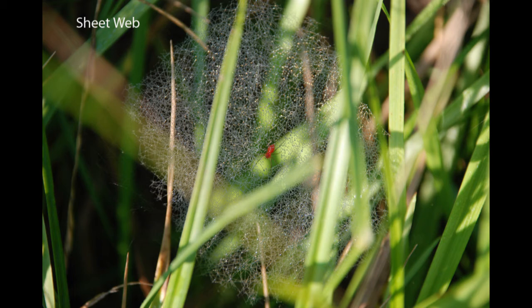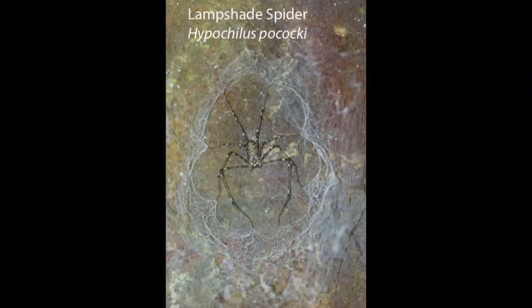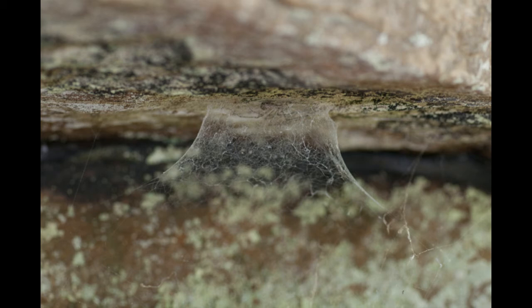Grass spiders build sheet webs in the grass — they're easy to spot on a morning when they're covered with dew. One of my favorite types of webs is that of the lampshade spider. These spiders are found on the underside of rock overhangs where they are protected from the elements. The spider spins a 3D web that is attached to the rock. As you can see in this photo, the web is as wide as the spider's leg span. If an insect touches the web, her sensitive legs will detect movement and she will quickly enjoy a meal. You can see the spider in the middle of the web — this is called a lampshade because it's three-dimensional and round.